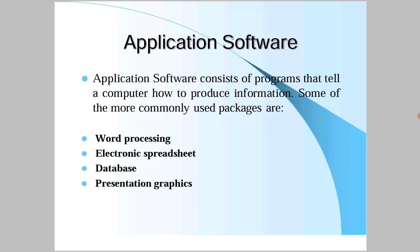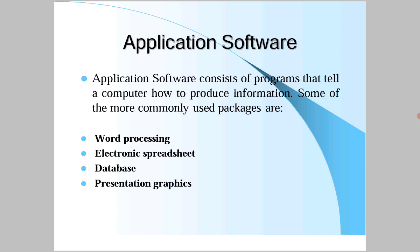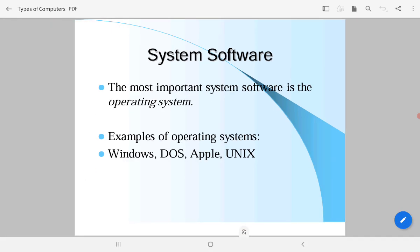Application software consists of programs that tell the computer how to produce information. Commonly used packages are word processing, electronic spreadsheets, databases, and presentation software. Application software is made for special purpose and specific users - like word processing software such as MS Word, spreadsheet software such as MS Excel, database software such as MS Access and Oracle SQL Server, and presentation graphics like MS PowerPoint.